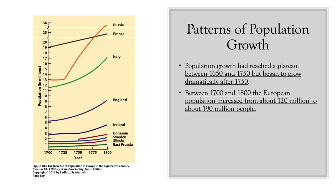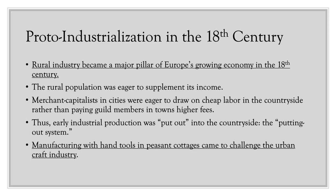Proto-industrialization — the beginning of the trend toward industrialization — became a major pillar of Europe's growing economy in the 18th century. Rural industry developed because the rural population was eager to supplement its income, especially during periods when not busy in agriculture. Agriculture is a lifestyle where you're either working intensely during planting and harvest, or not at all — those long stretches of inactivity were a great opportunity for peasants to supplement their income, which is where the cottage industry really developed.